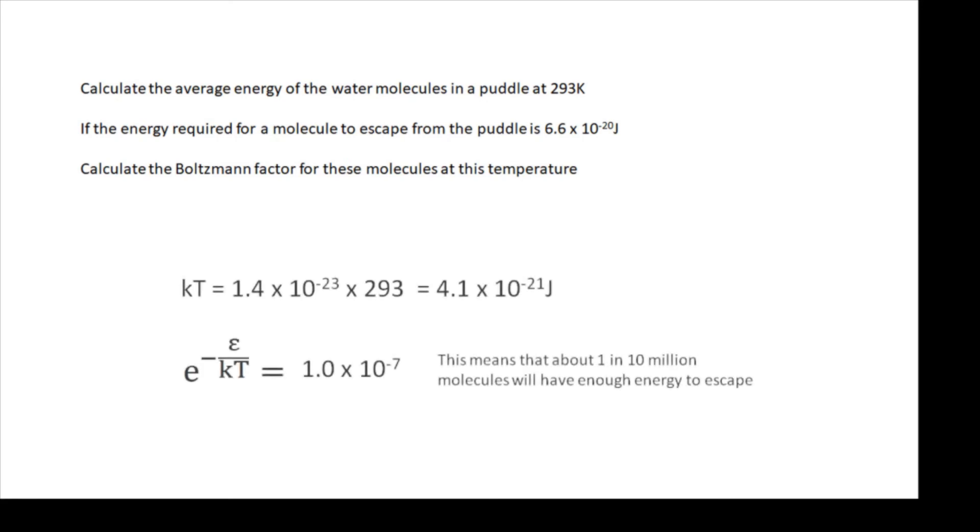Well, that's long enough. So the average energy we're going to use this estimate, KT equals Boltzmann's constant times 293, 4.1 times 10 to the minus 21. And then e to the minus epsilon over KT works at 1 times 10 to the minus 7, and that basically means that 1 in 10 million molecules will have enough energy to escape.